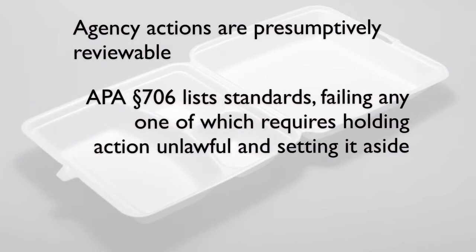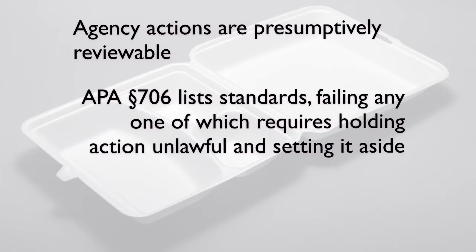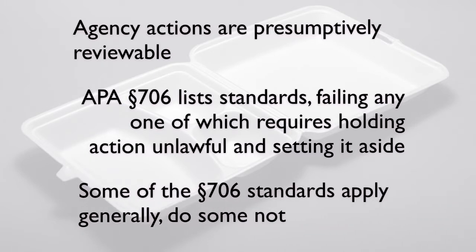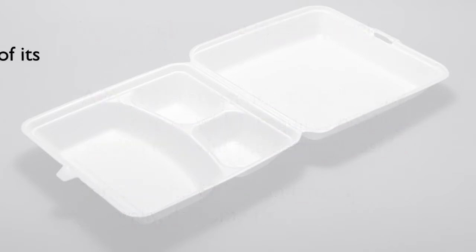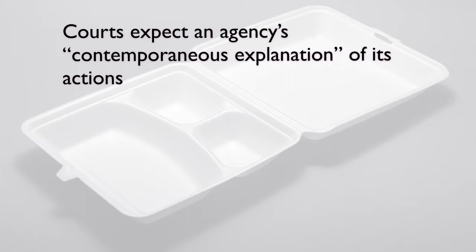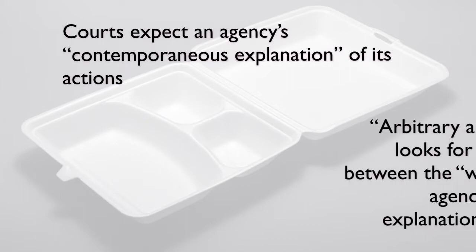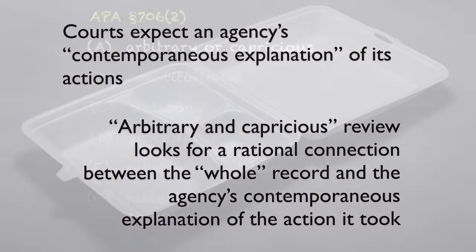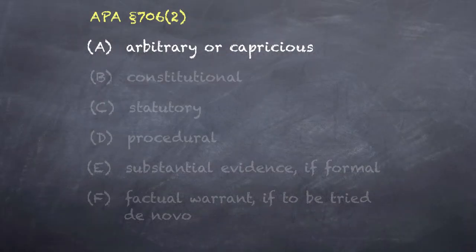First, some takeaways: agency actions are presumptively reviewable. APA section 706 lists standards, failing any one of which requires holding an action unlawful and setting it aside. Some of the section 706 standards apply generally; some do not. Courts expect an agency's contemporaneous explanation of its actions. Arbitrary and capricious review looks for a rational connection between the whole record and the agency's contemporaneous explanation of the action it took.